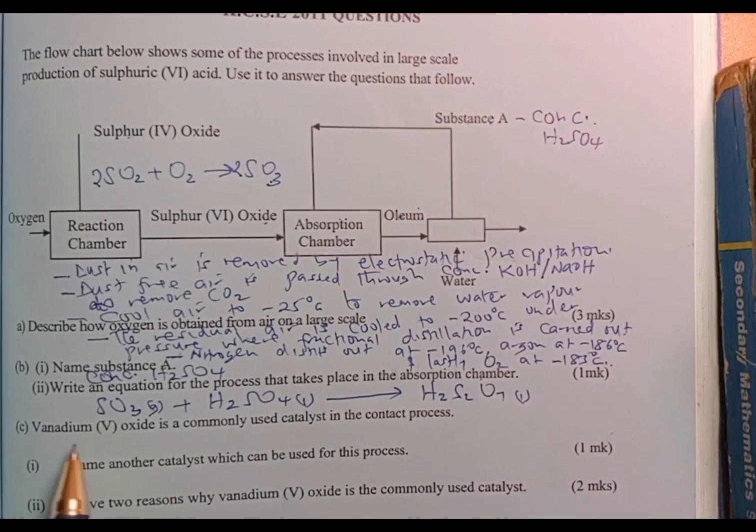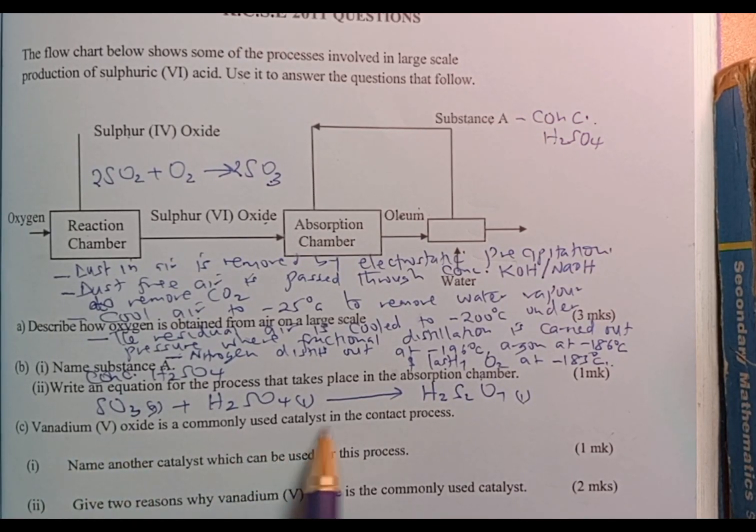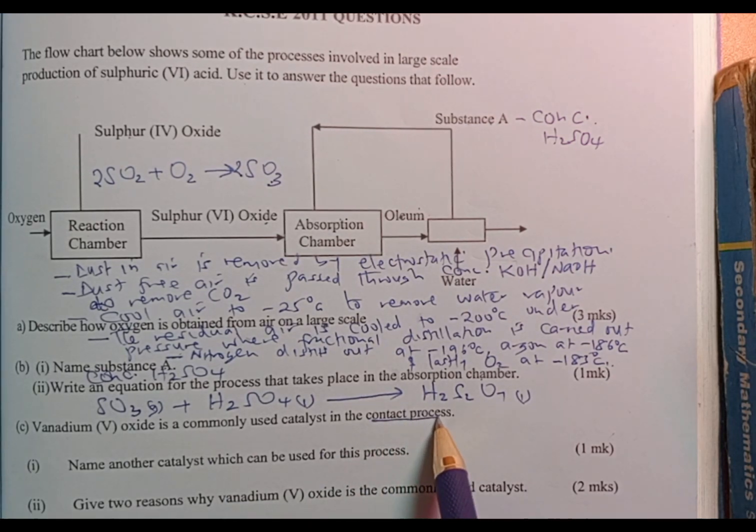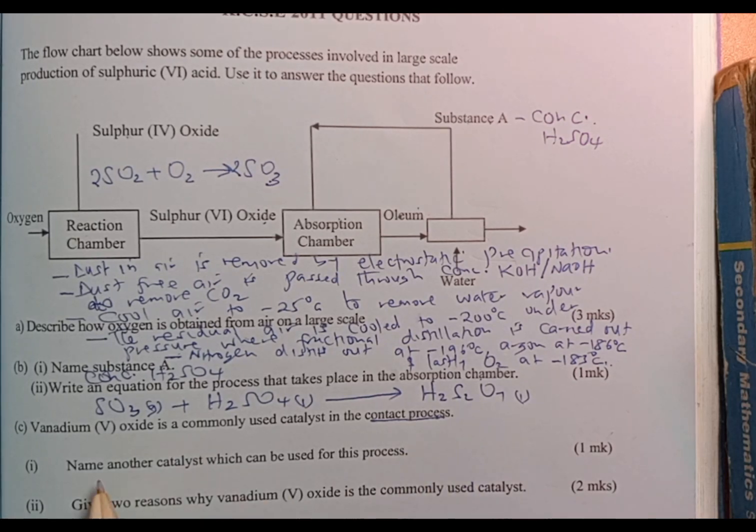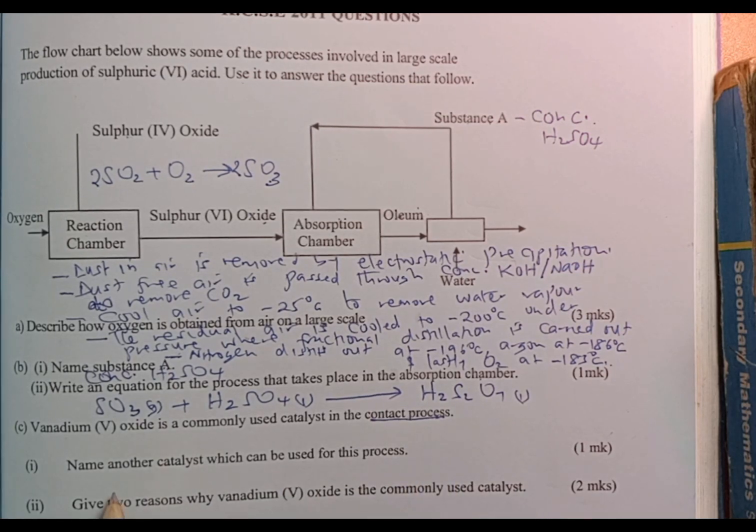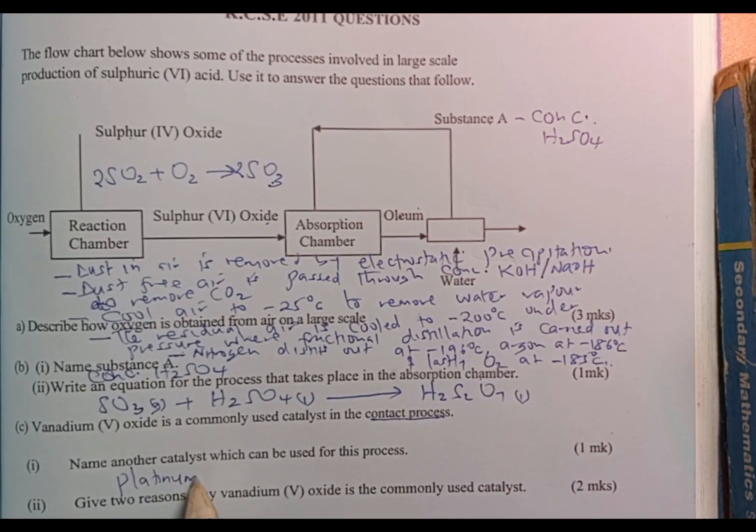Next question: Vanadium pentoxide is commonly used as a catalyst in this process. Actually, the process of manufacturing sulfuric acid is known as the contact process. Name another catalyst which can be used in this process. We use platinum catalyst.